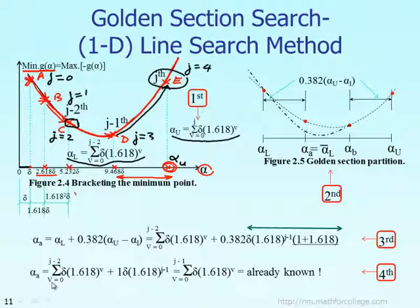In general, after four iterations you can figure out the upper bound at E and the lower bound at C. In general, the upper bound is at iteration J, and the lower bound is at iteration J minus two. That's why in this summation, the index V goes from zero to J for the upper bound, and for the lower bound formula, V goes from zero to J minus two.